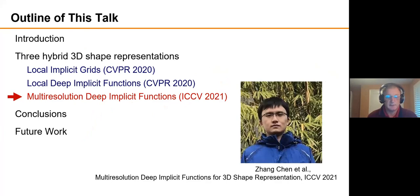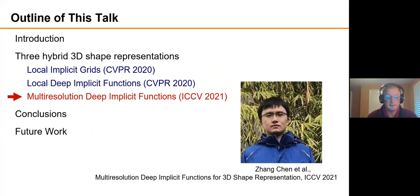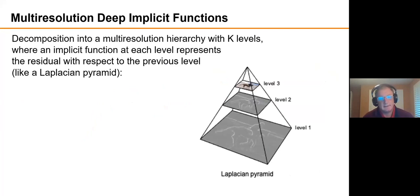So that's Local Deep Implicit Functions. And then I'll describe one more example. This is a paper that was done by Zang Shen that will appear, I guess, next month in ICCV. The idea here is instead of decomposing space into local regions, we're going to decompose XYZ based on resolutions and frequencies in space, basically.